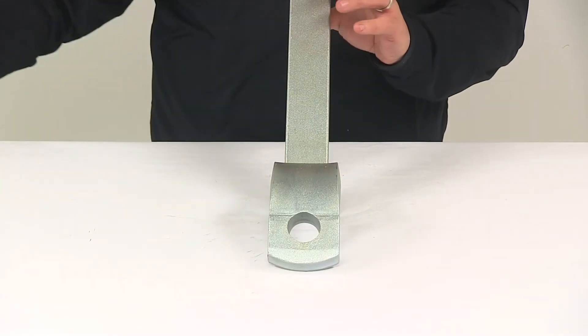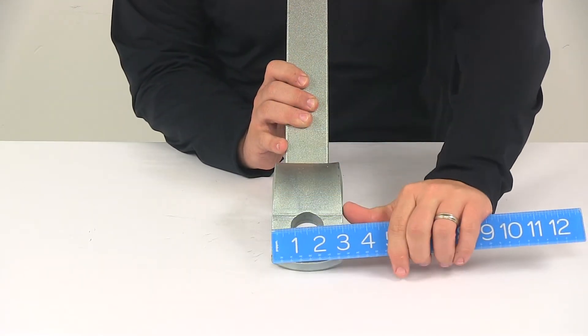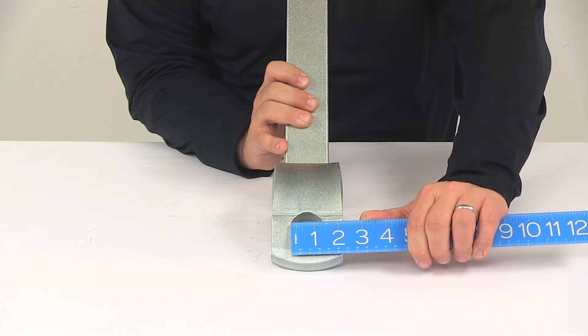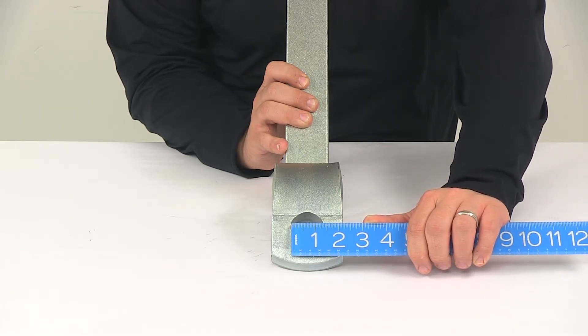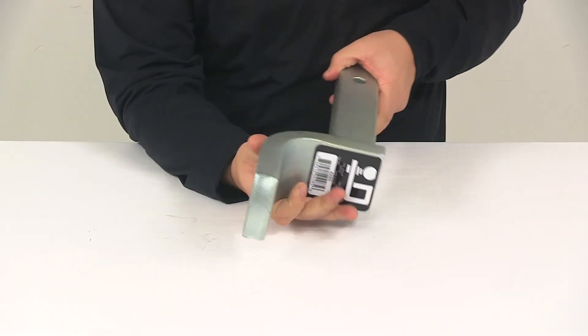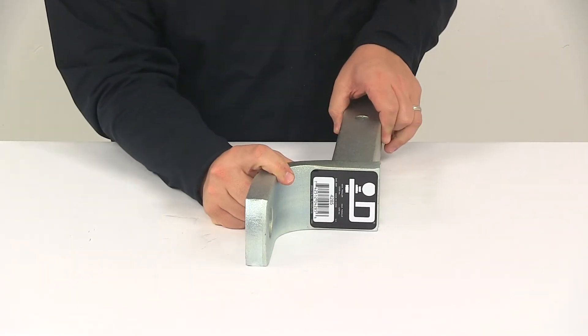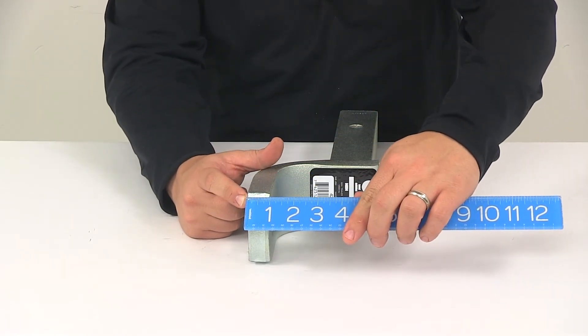A few measurements to go over with you real quick. The ball hole diameter is going to measure about an inch and a quarter. The draw bar thickness, or platform thickness, is going to measure one inch thick.